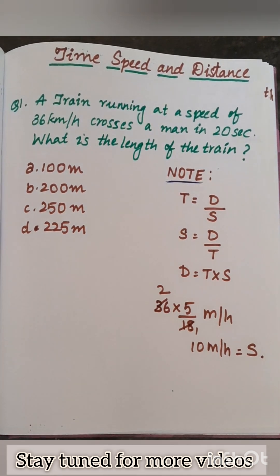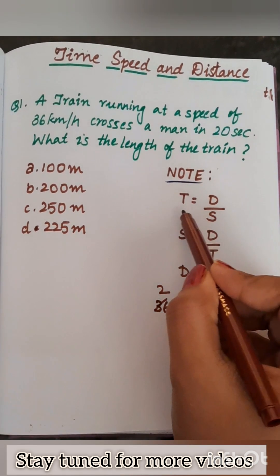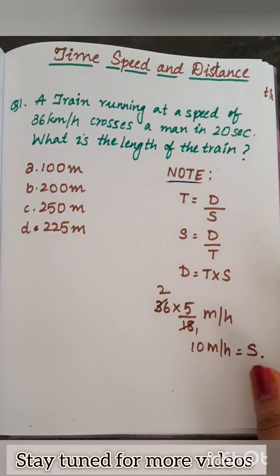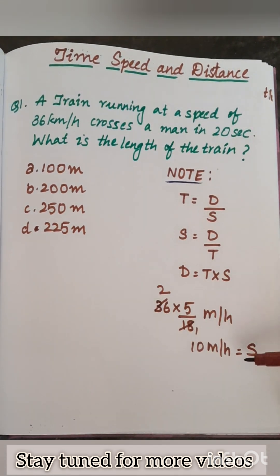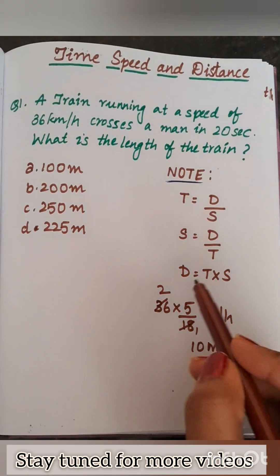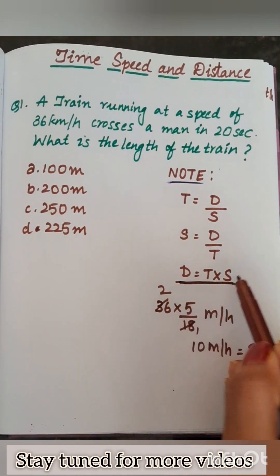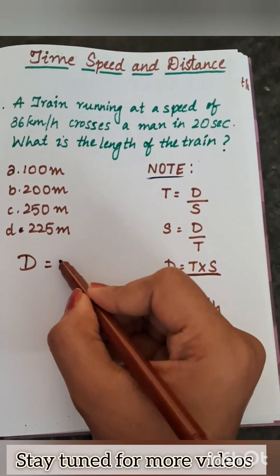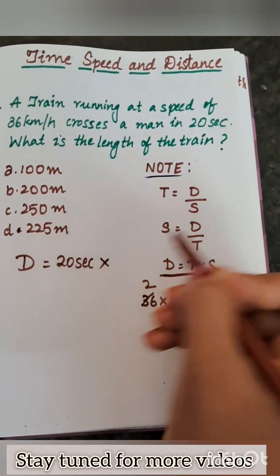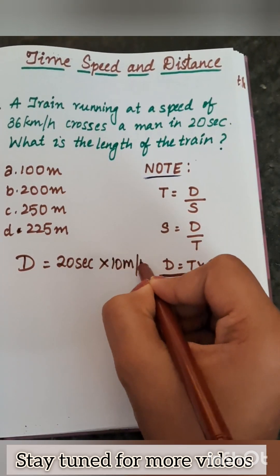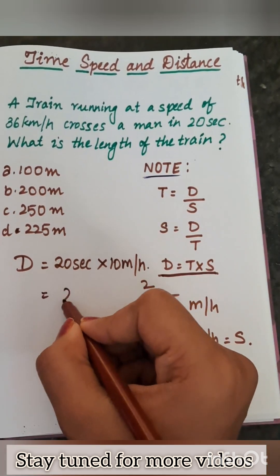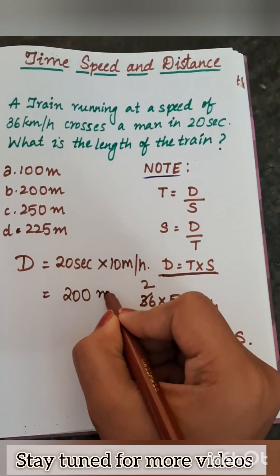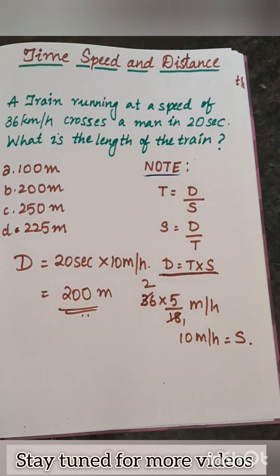They have given time as 20 seconds, and we have to find the distance. Distance is equal to time into speed. So d equals t into s, where t is 20 seconds and s is 10 meters per second. That gives 200 meters. Therefore the answer is option B.